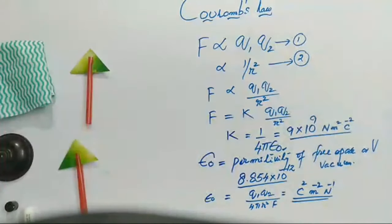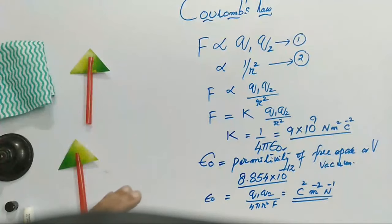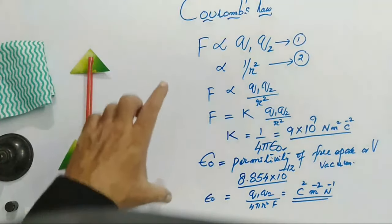F is directly proportional to the product of the two charges and inversely proportional to the square of distance of separation. When we combine those two, F is directly proportional to Q1 Q2 by R square. When the proportionality sign is removed, the right side is multiplied by a constant: F equals K times Q1 Q2 by R square. K equals 1 by 4 pi epsilon naught, whose value is 9 into 10 to the power of 9 Newton meter square Coulomb minus 2. Epsilon naught is called the permittivity of free space. This is Coulomb's law.